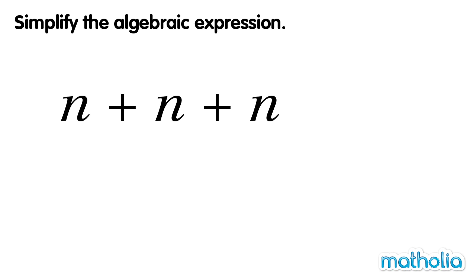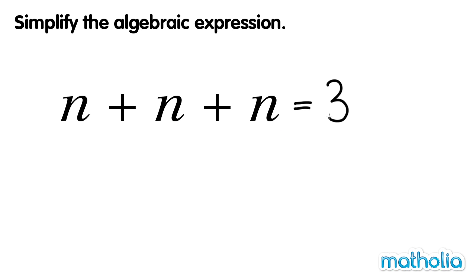Let's simplify n plus n plus n. 1 plus 1 plus 1 equals 3. So, 1n plus 1n plus 1n equals 3n. n plus n plus n equals 3n.